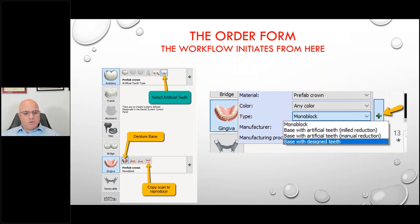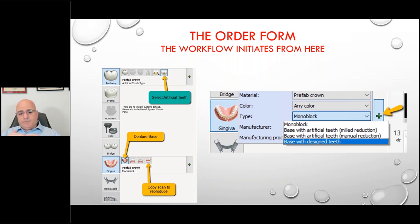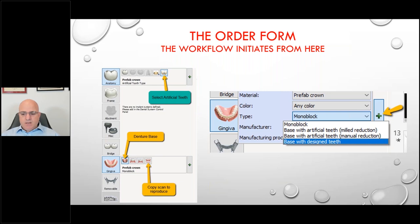The order form is the hub where you indicate what kind of workflow you want to follow. In Three Shape, you set it up by selecting the artificial teeth first and foremost, then selecting the type of denture base — whether carded, mono, or a separate arch with denture base. You can even do it in quadrants, individual teeth, or in three sections — anterior and distal — or a full arch. Different companies feel one workflow is better than another, but it's really what's most efficient for your laboratory.